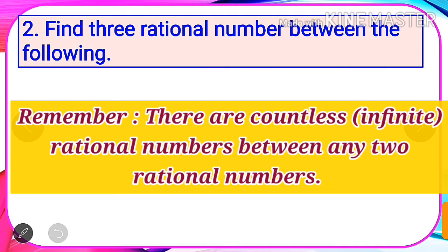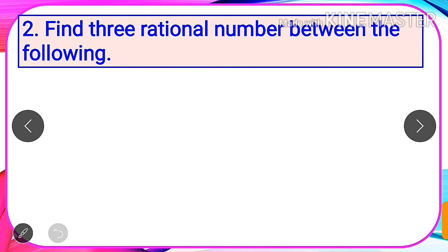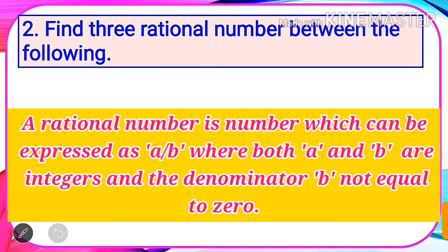Let us learn how to find two or more rational numbers between given two rational numbers. We should remember that we have an infinite number of rational numbers between any given two rational numbers. A rational number is a number which can be expressed in the form a by b, where both a and b are integers and the denominator b is not equal to zero.